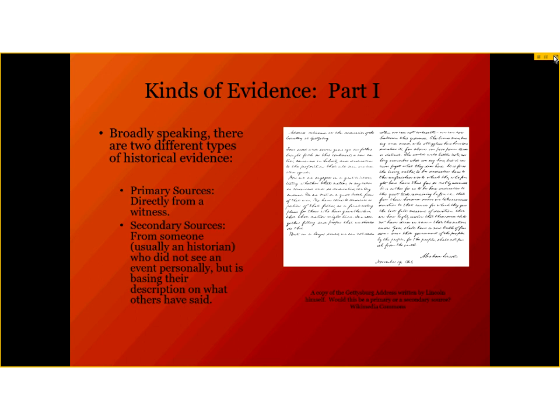Secondary sources are those that come from people who did not directly participate in an event but are basing their descriptions on other evidence. The most common form of secondary source is your average history book. Consider the textbooks in your class — did the authors see anything they're actually talking about? No, they weren't born for many years after these events occurred. They believe they know what went on because they've read hundreds of first-hand accounts and other historians' work, walked the fields, and seen where things happened. They're presenting that result to you in the form of a secondary source.